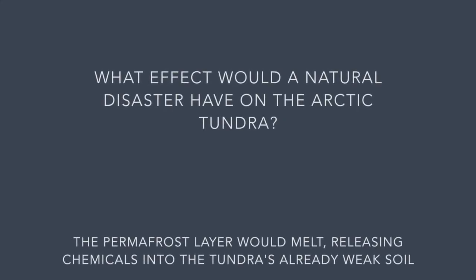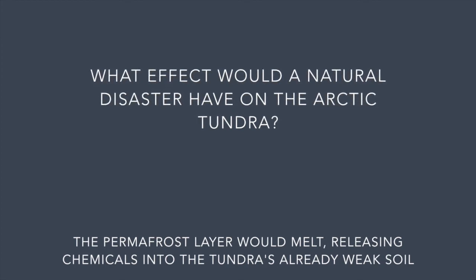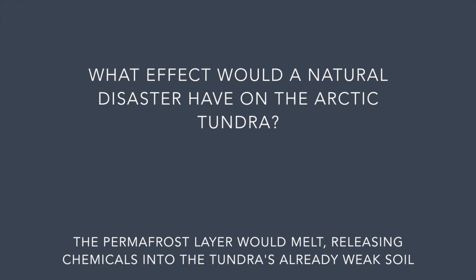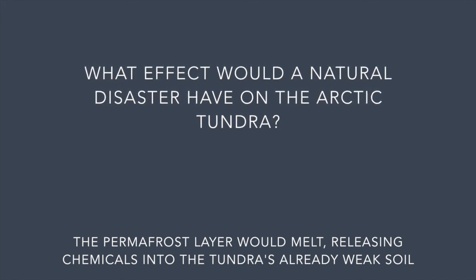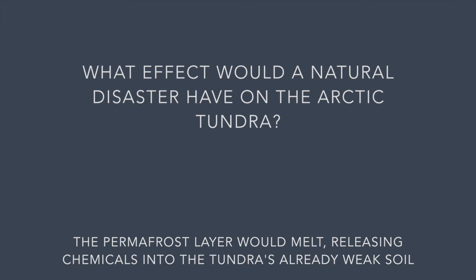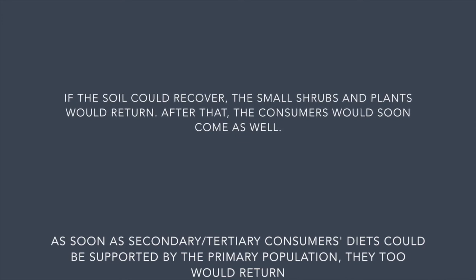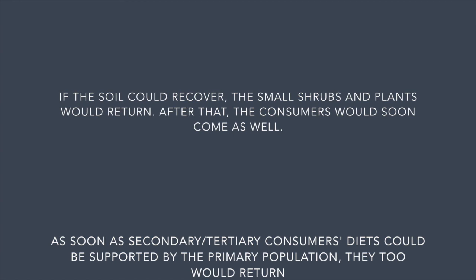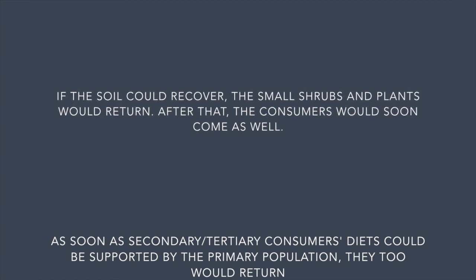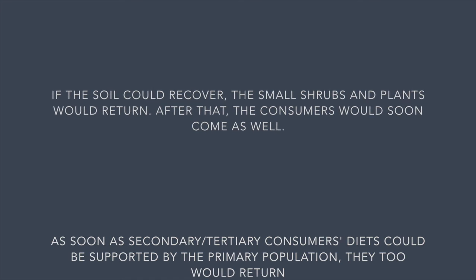Global warming is the most relevant disaster that could occur that is detrimental to the tundra. It would melt the permafrost, which would release its organic compounds, and be the end of the tundra. If this were to occur, the tundra would be slow to get back to its frozen state. After the permafrost was frozen again, the small plants would be the first to return into the ecosystem, followed by the animals that feed off them. The larger animals would then return once there were enough small animals to sustain their life.